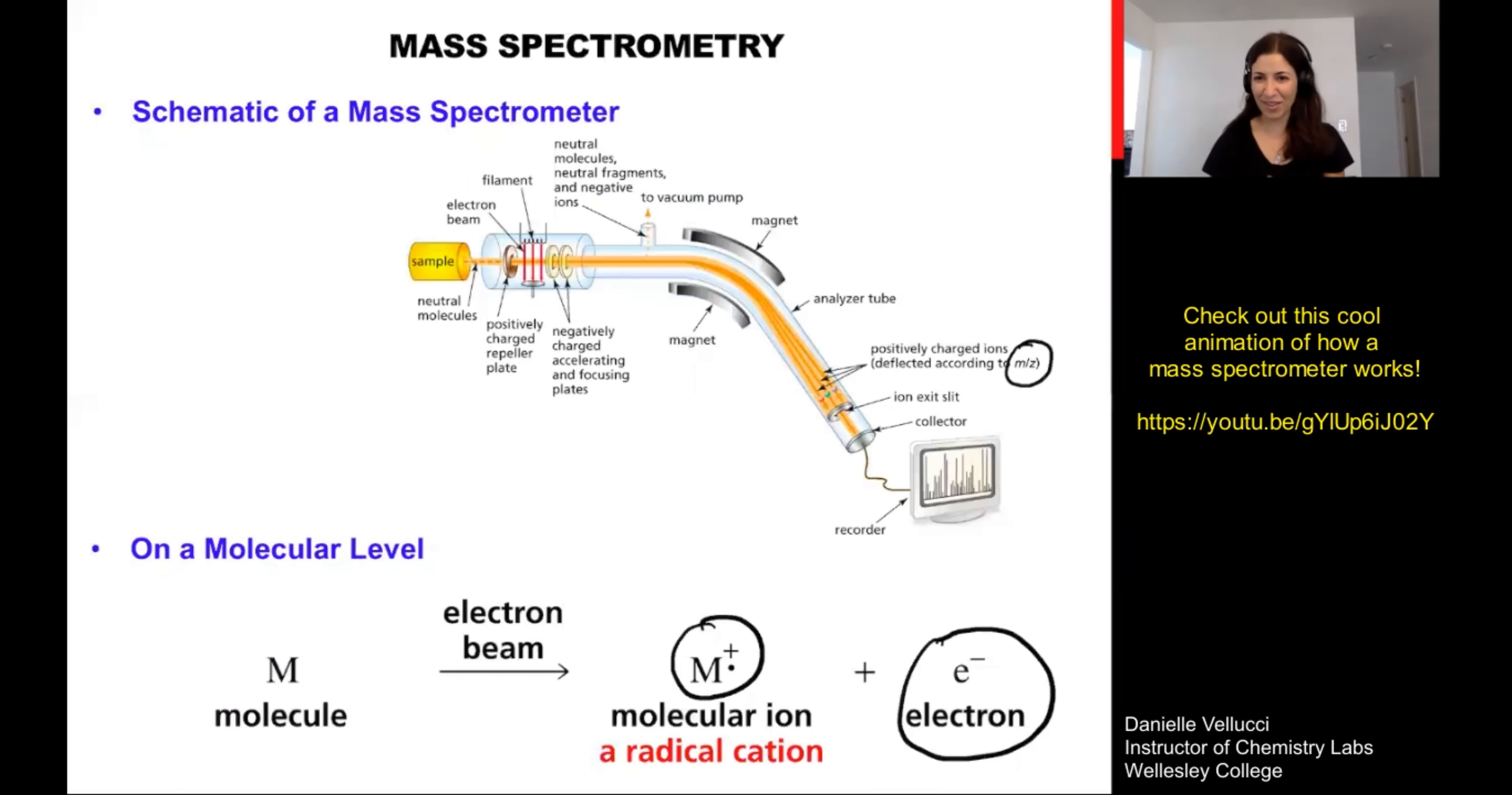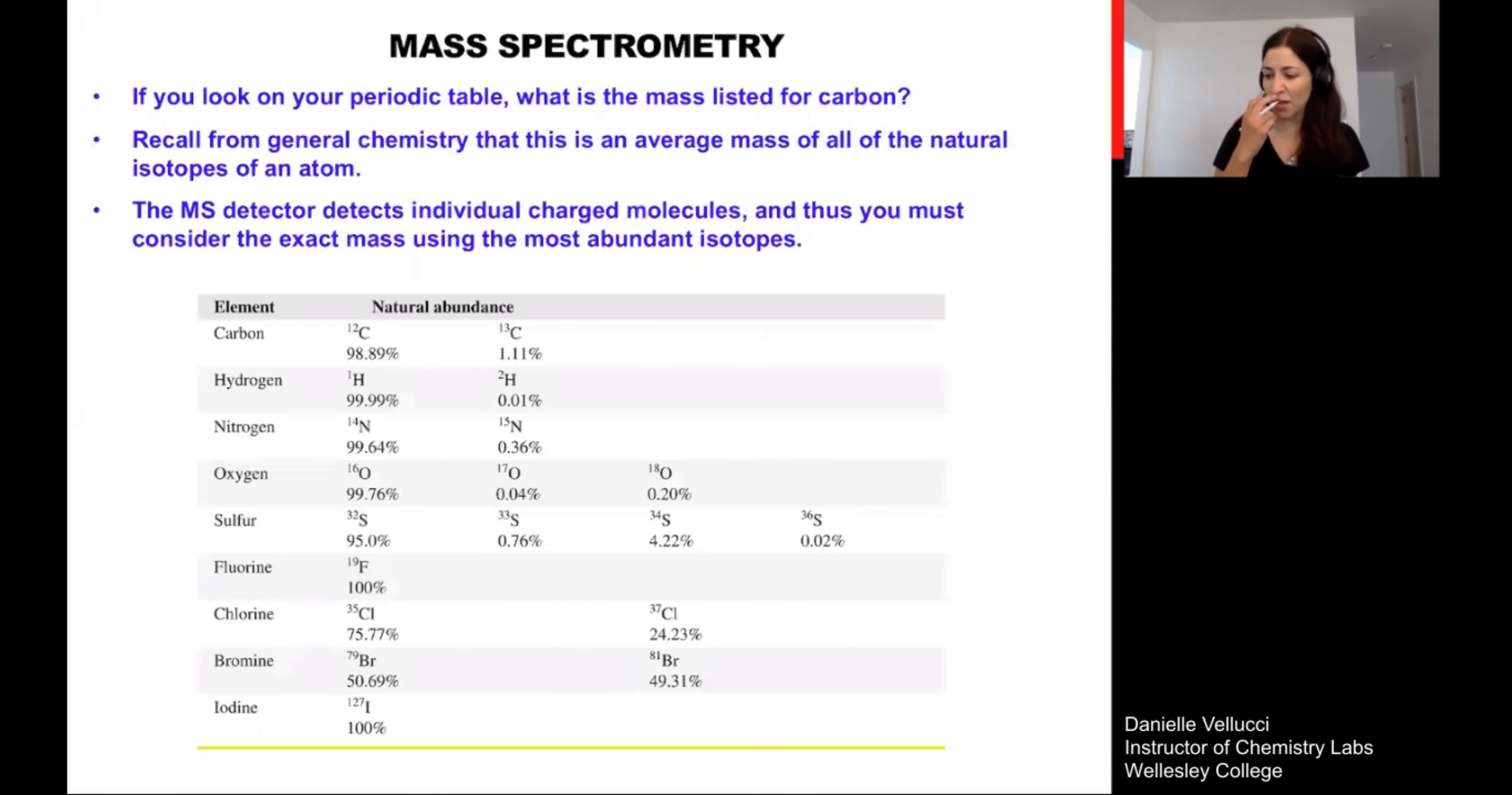So that is the five second version of mass spectrometry. It's actually really interesting. And if you have more interest in the physics of these instruments, you could certainly learn more about that. So let's consider what the output is going to be for our mass data for our given carbon containing molecules. If you were to look on the periodic table at carbon.